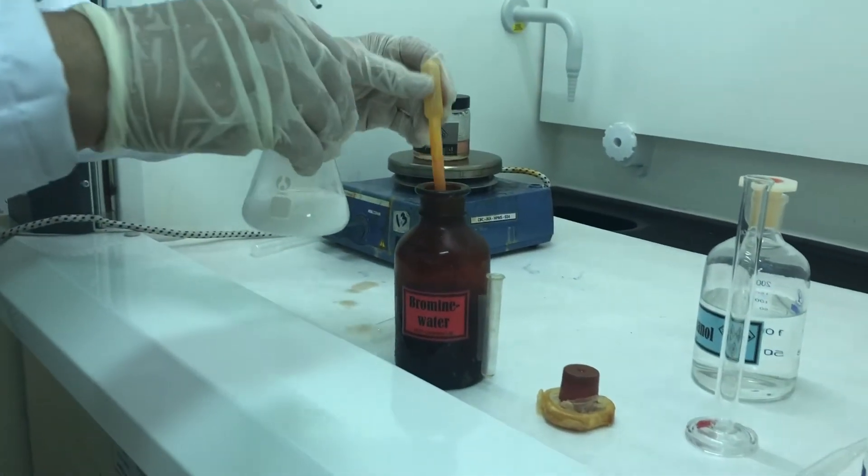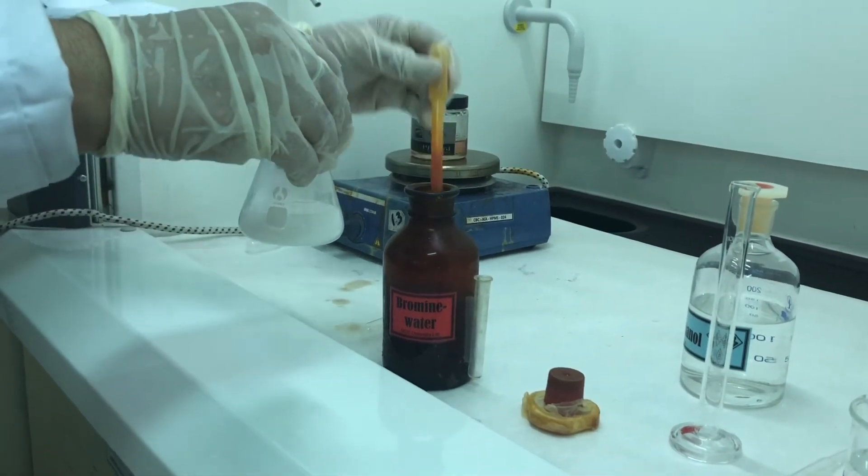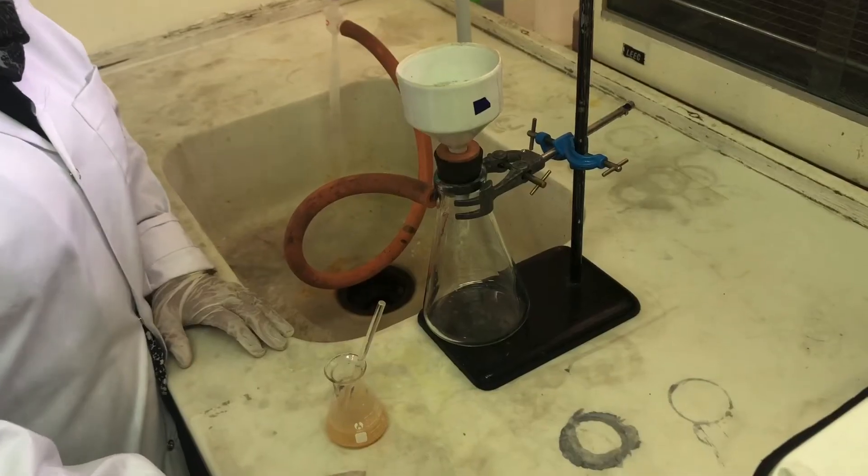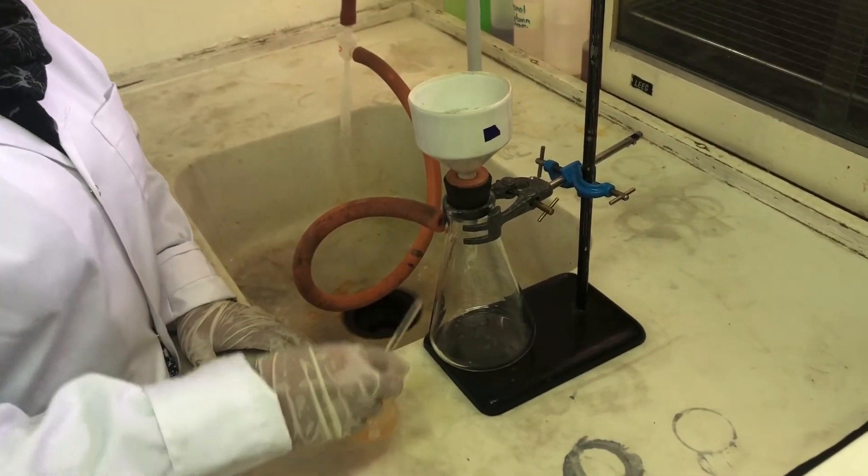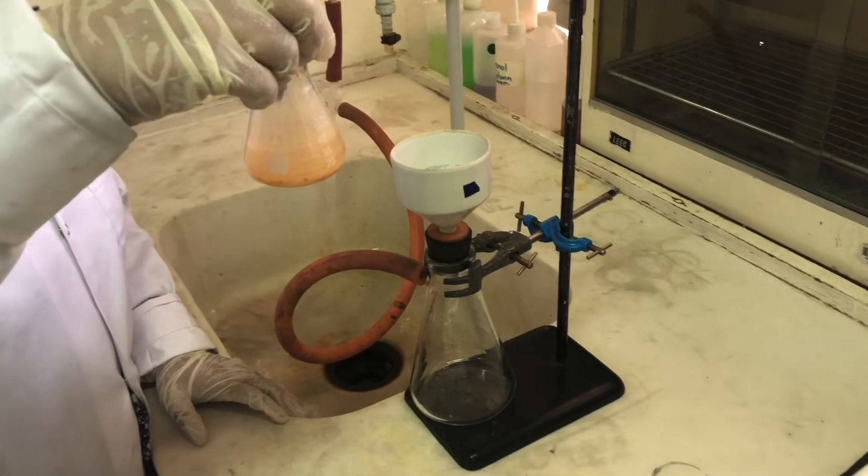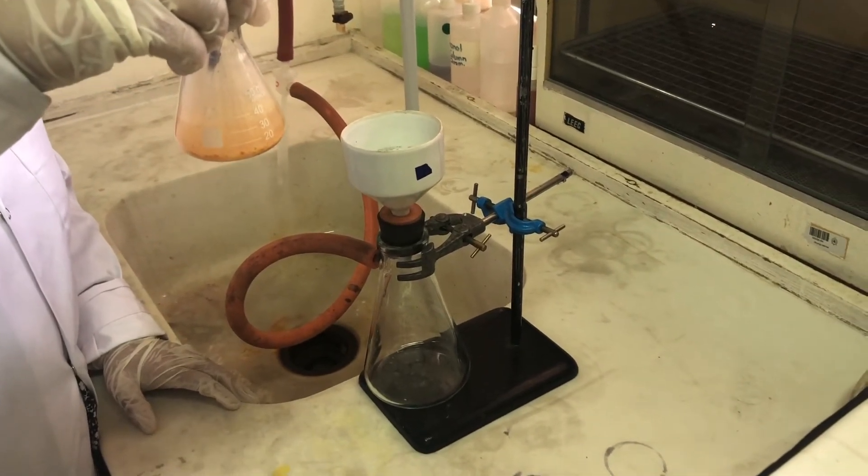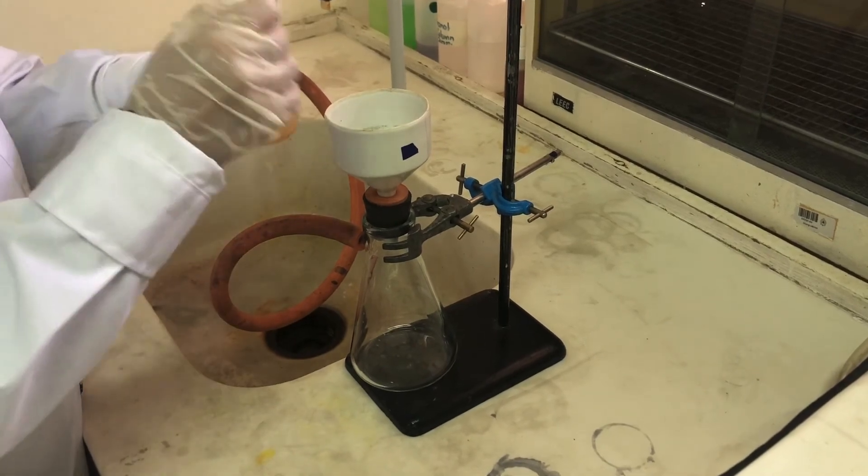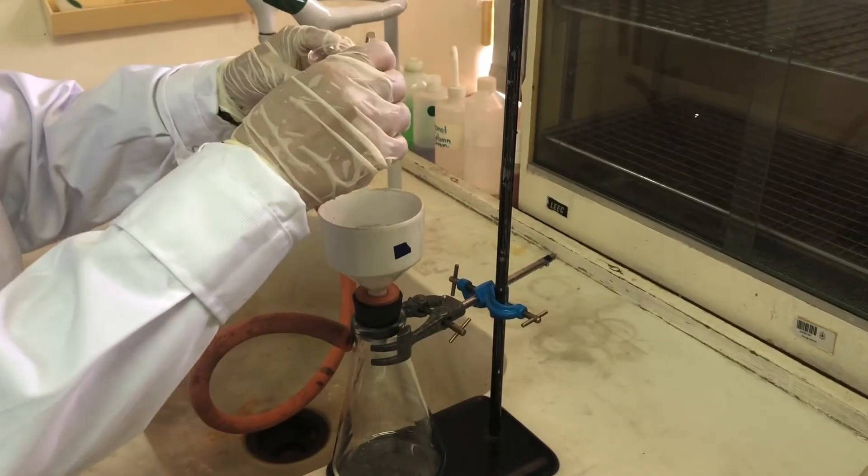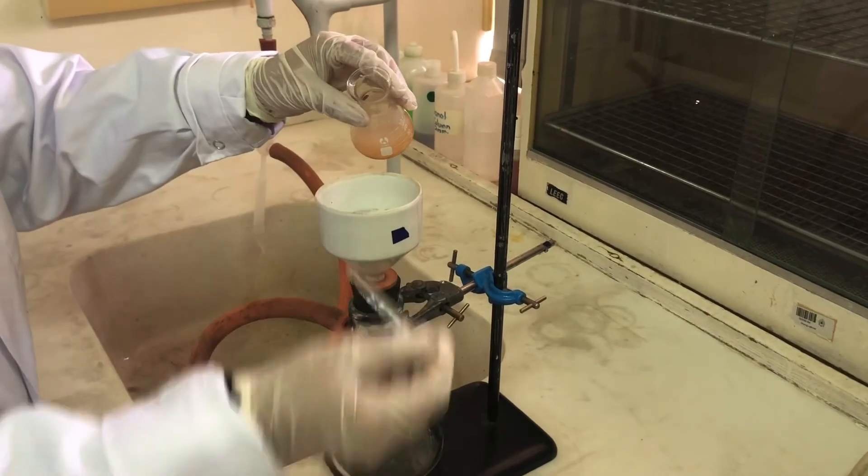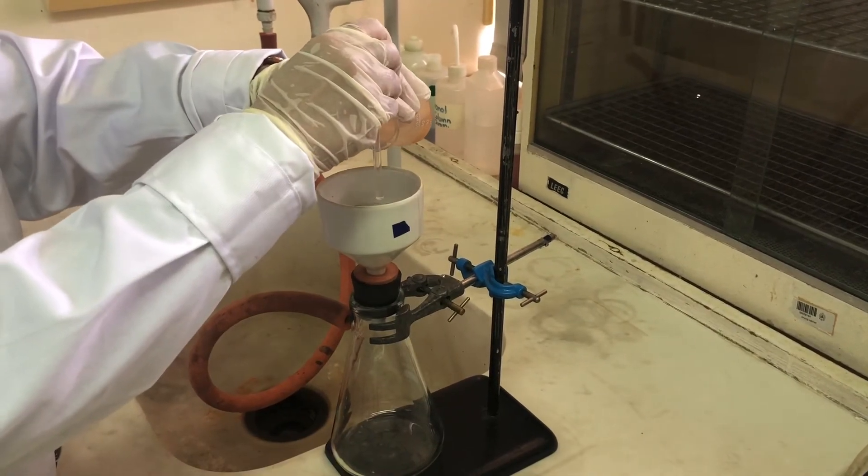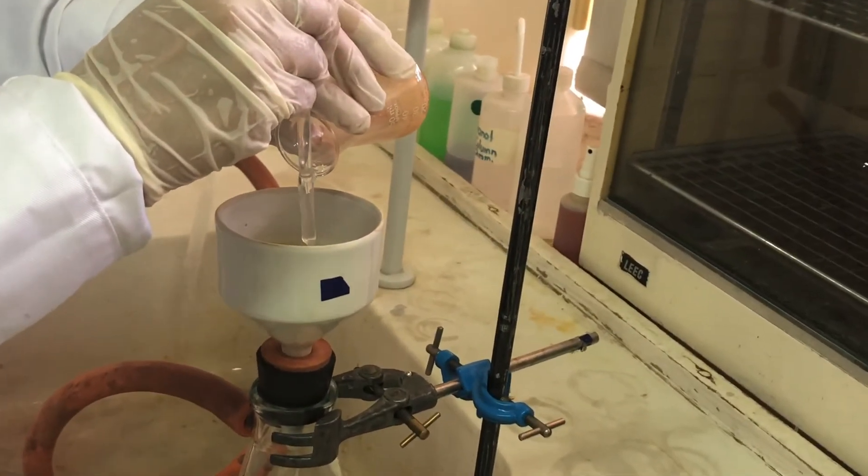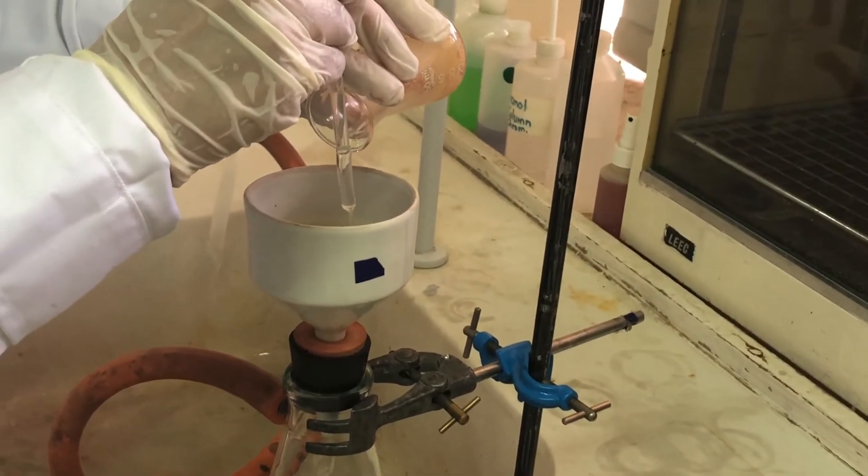So we keep adding till the brown color remains inside the solution. Step 3 we have got the product as you can see, 2,4,6-tribromophenol. We are going to filter this product. As you know how to do the filtration, we are going to do filtration and then washing is needed.